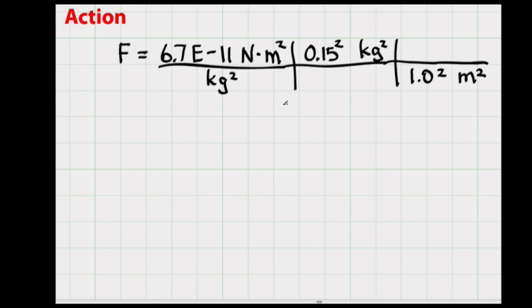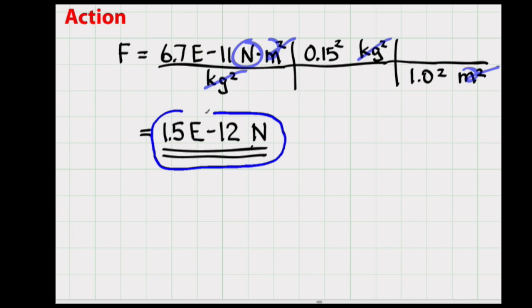So I've substituted numbers into my equations. Let me check my units. So kilograms squared cancels kilograms squared there, meters squared there cancels meters squared there, and my answer comes out in Newtons as I expect. Excellent. Let me do my calculations. So the gravitational force between a banana and an apple is about 1.5 times 10 to the minus 12 Newtons.